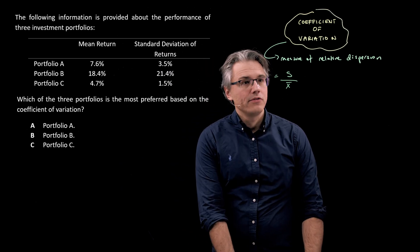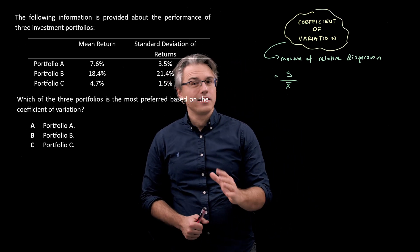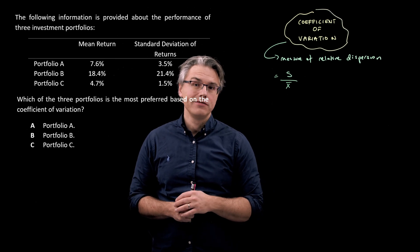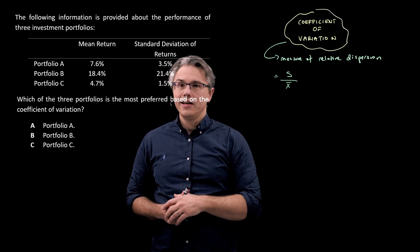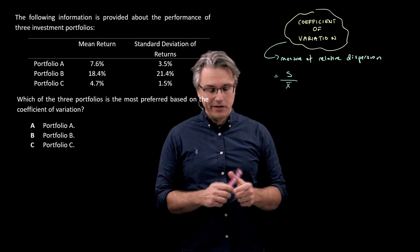And obviously, we want to pick the one which has the lowest dispersion of volatility relative to its mean value. Unlike with other measures, you're not going to pick the highest one, but lowest one.